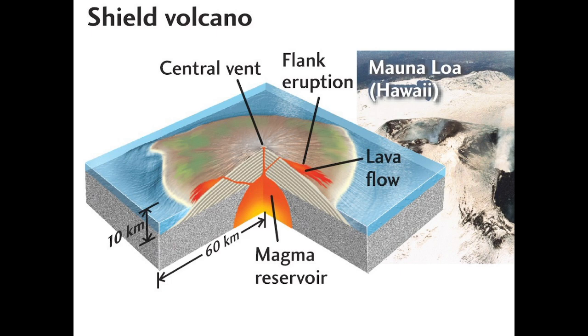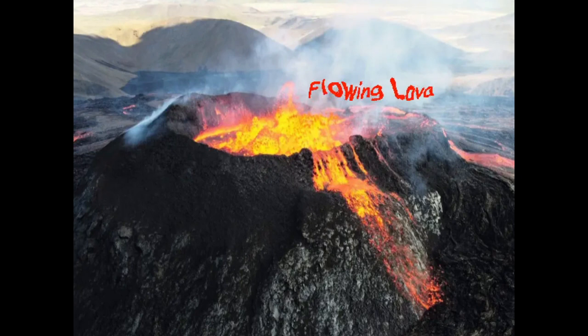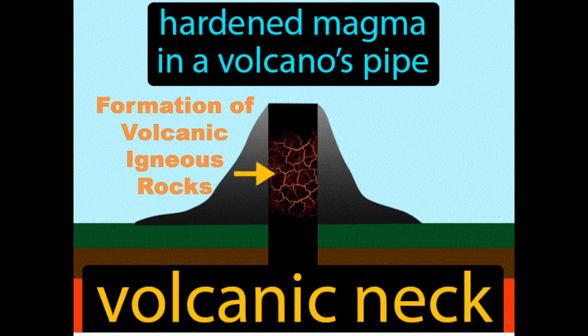Mauna Loa, Hawaii. Mauna Loa's magma chamber feeds flowing lava. Hardened magma in the volcano's pipe forms a volcanic neck. Formation of volcanic igneous rocks.